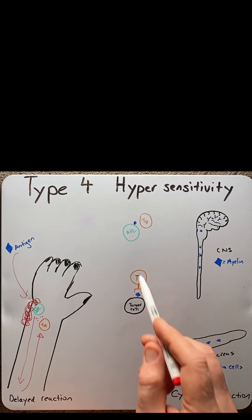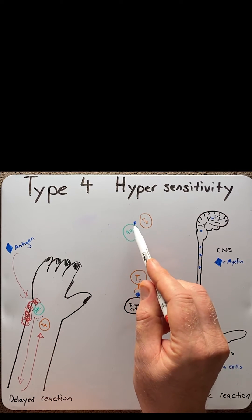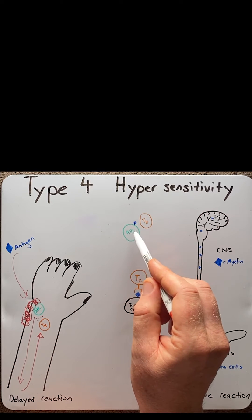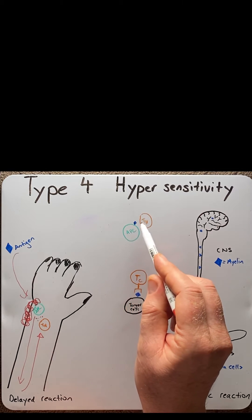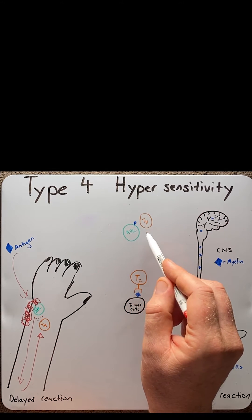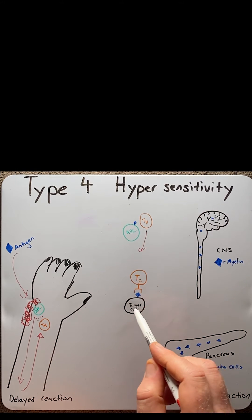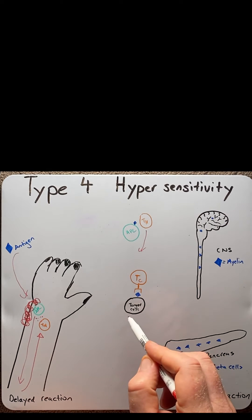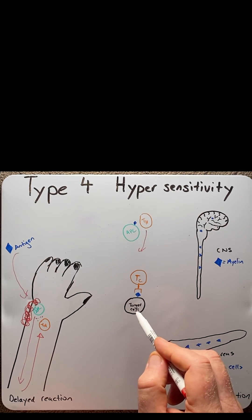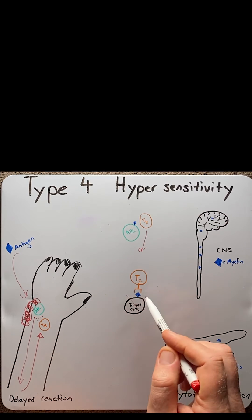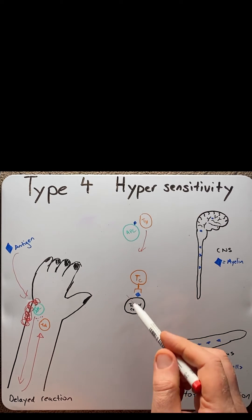In cytotoxic reactions, the same principle occurs. The antigen is engulfed by an antigen-presenting cell and presented to a T-helper cell, which then activates a cytotoxic T-cell. Now, where the cell with the antigen, in some cases could be a cancer cell or a virally infected cell, is then destroyed by the cytotoxic T-cell, which is a good thing.